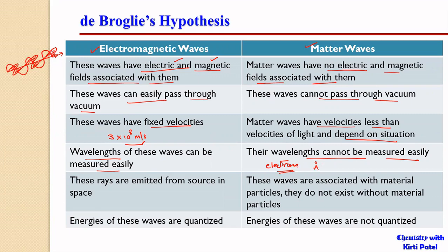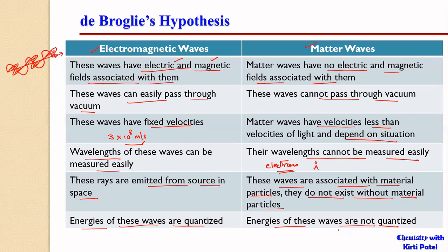We can easily measure the wavelengths associated with electrons because their mass is very small. Electromagnetic waves are emitted from a source and propagate through space, while matter waves are associated with material particles — they are not emitted out but are associated with the material particle, and they do not exist without the material. The energies of electromagnetic waves are quantized, as seen in Planck's theory, while matter waves are not quantized — they have continuous energies.